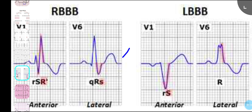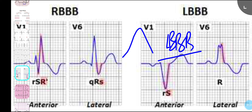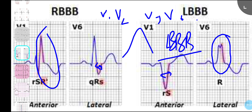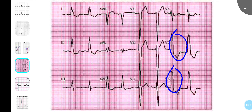A wide QRS represents bundle branch blocks. For RBBB and LBBB, look at leads V1, V2, V5, and V6. In RBBB, there is an RSR' pattern in V1 and V2, and slurring of the S wave in V5 and V6. In LBBB, there is an M pattern in V5 and V6, and slurring of the S wave in V1 and V2. Here you can see the M pattern in V5/V6 and slurring in V1/V2 — that's LBBB.